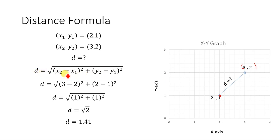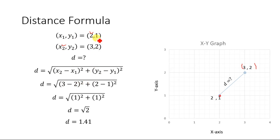The distance formula is: d equals the square root of (x2 minus x1) whole square plus (y2 minus y1) whole square. We subtract x1 (which is 2) from x2 (which is 3), giving us (3 minus 2) squared, and y2 is 2 while y1 is 1, giving us (2 minus 1) squared.